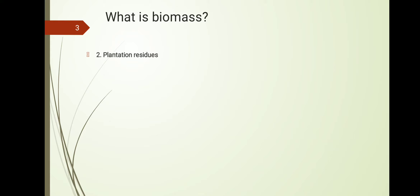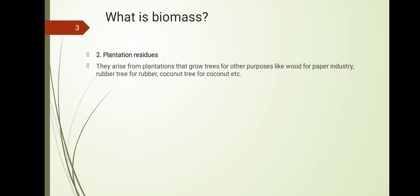The second category is plantation residues, which arise from plantations of trees grown for different purposes — for example, wood for the paper industry and rubber. In Kerala, we have a lot of rubber estates and other plantation trees. In Kerala's perspective, agriculture residues are very minimal because there is not much agriculture here, but plantation residues are predominant.